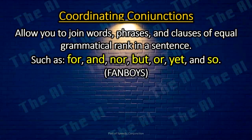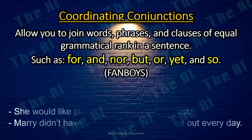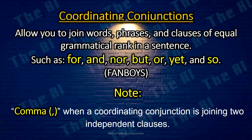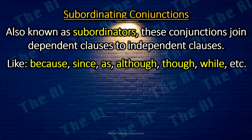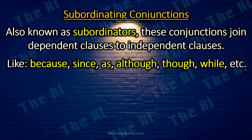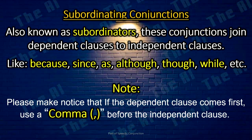Coordinating conjunctions allow you to join words, phrases, and clauses of equal grammatical rank in a sentence, such as for, and, nor, but, or, yet, and so — remembered as FANBOYS. For example: She would like pizza or a salad for breakfast. Mary didn't have much money, but she ate out every day. Note that a comma is used when a coordinating conjunction joins two independent clauses. Subordinating conjunctions, also known as subordinators, join dependent clauses to independent clauses, like because, since, although, as, while, though, whereas, etc. For example: Before he leaves, make sure his room is clean. He drank two cups of tea because he was thirsty. Note: if the dependent clause comes first, use a comma before the independent clause.